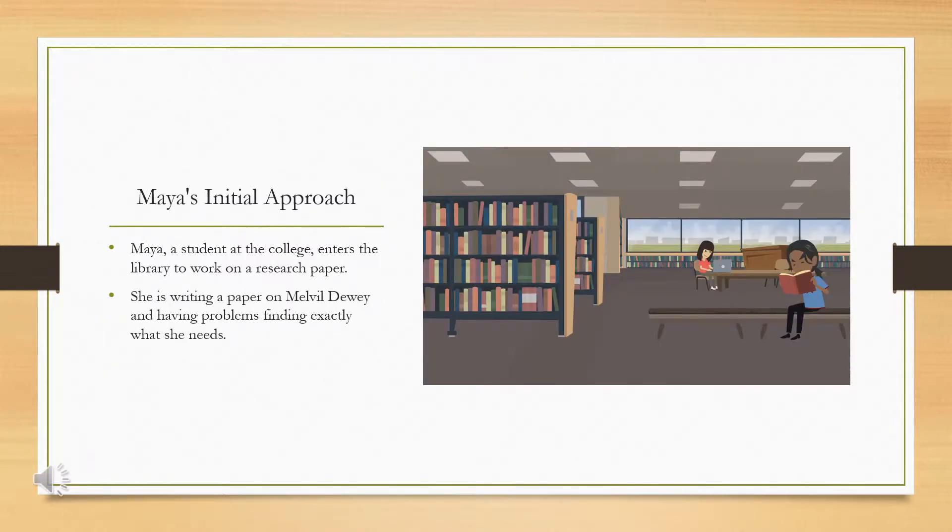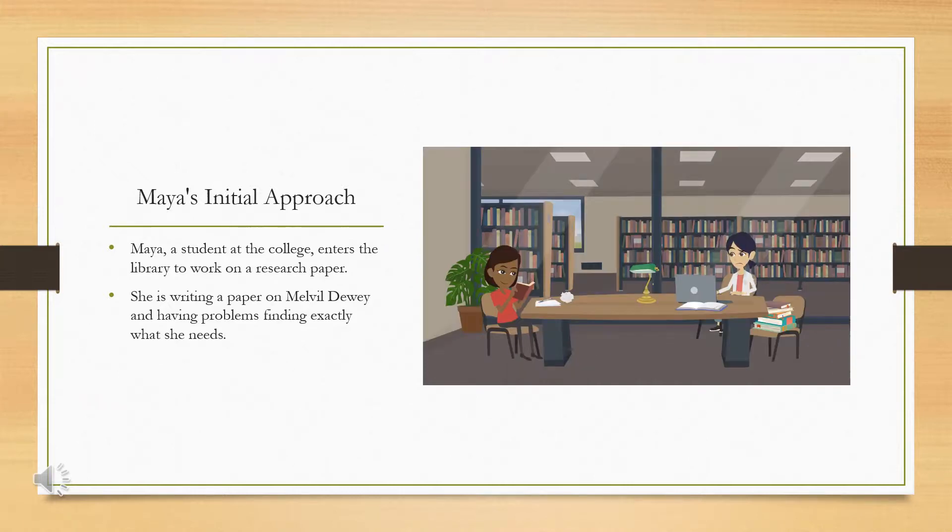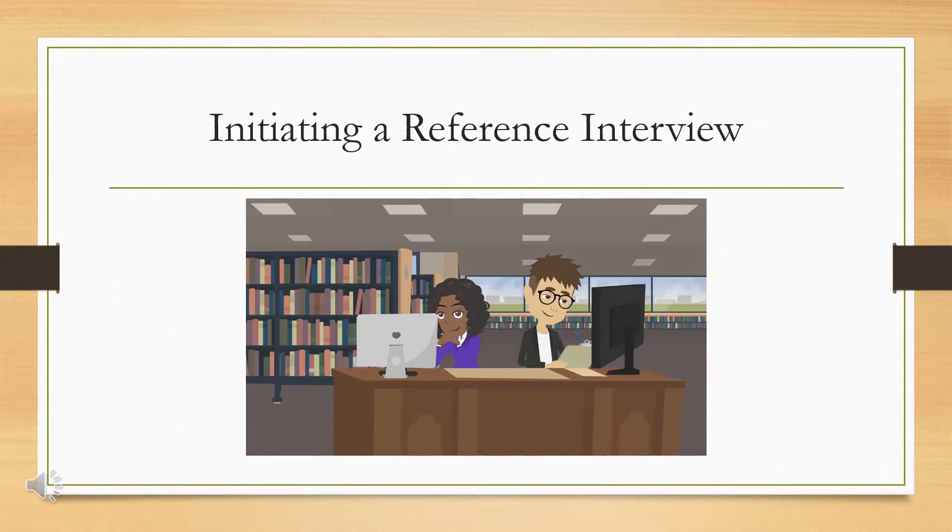Maya, a student at the college, enters the library to work on a research paper. She's writing about Melville Dewey and having problems finding exactly what she needs. Maya decides to walk to the desk where she sees two librarians. One looks up and smiles.